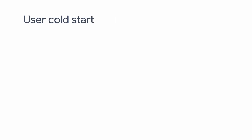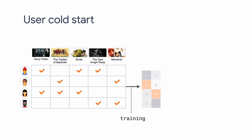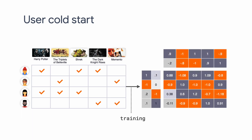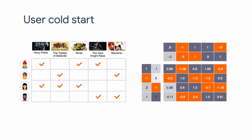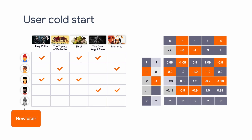User Cold Start refers to the situation in which you already have a recommender working with some users and items, but then a new user comes in and that user has no interaction with any of the candidate items yet. In this case, the recommender knows nothing about this new user and is likely to have difficulty generating desirable recommendations. The general strategy to mitigate the User Cold Start problem is to learn about the cold user's preference as soon as possible, and there are a few common approaches to achieve that.